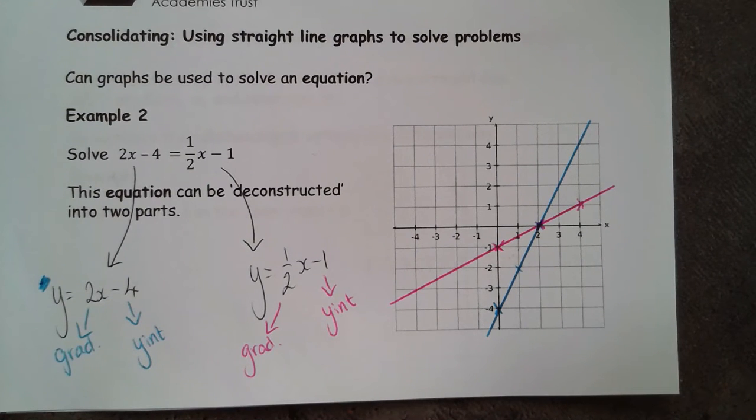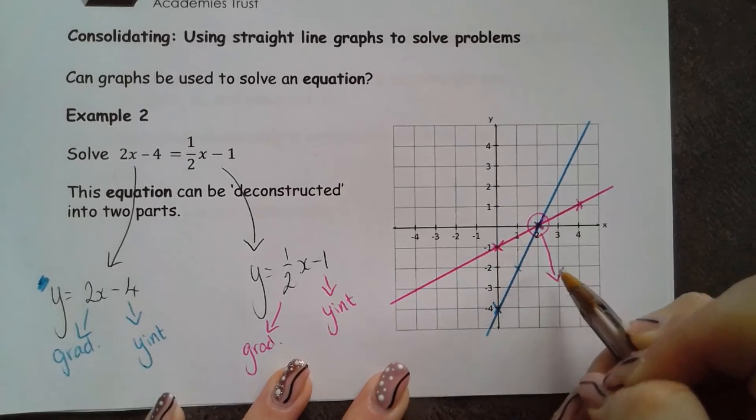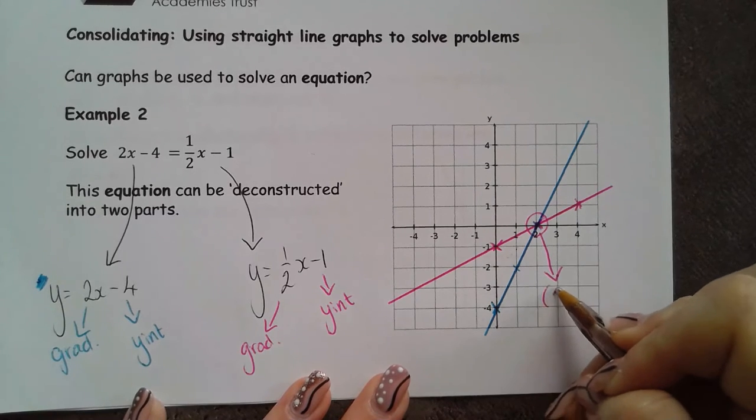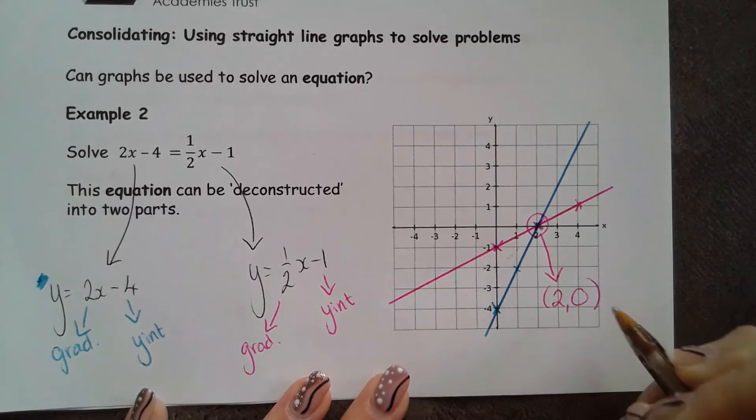The point where these cross is just here. It's the point of intersection. That's where these two lines are the same as each other. This is at the x-coordinate 2 and the y-coordinate 0.